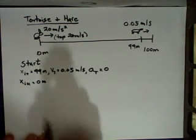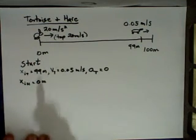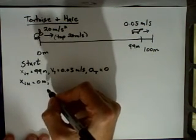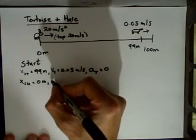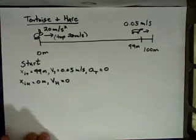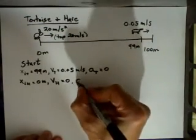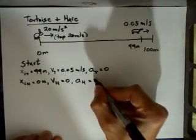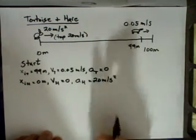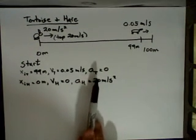Now, the hare starts off initially at the start line, at position 0 meters. It's not completely stated, but it's implied, and it's important to know what's being implied, that the velocity of the hare at the start there is actually 0, because he's taking off from rest. And he also has an acceleration of 20 meters per second squared. And these are usually the types of information you want to ask about each object. What is its initial position, velocity, and acceleration?